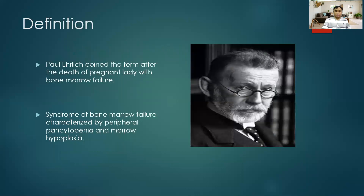I don't think you can recognize this gentleman — he is Paul Ehrlich, who was a Nobel Prize winner. He was one of the famous hemato-oncologists and he was the one who termed aplastic anemia when he was reporting a case of a pregnant lady who died because of bone marrow failure. So aplastic anemia is a syndrome of bone marrow failure which is characterized by peripheral pancytopenia and marrow hypoplasia.